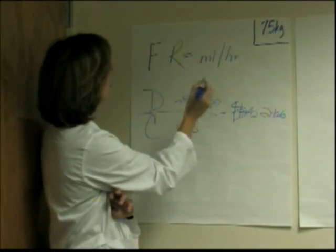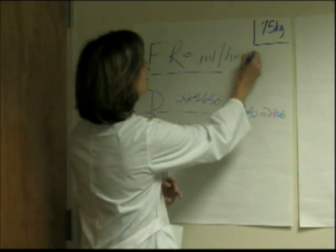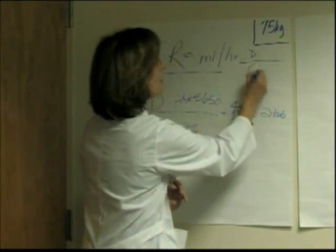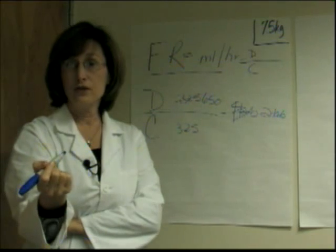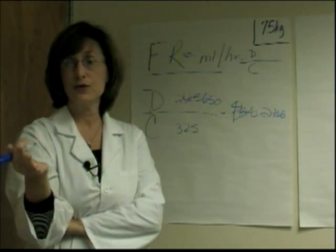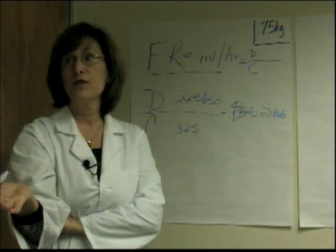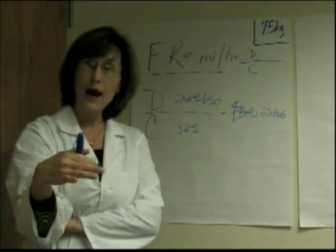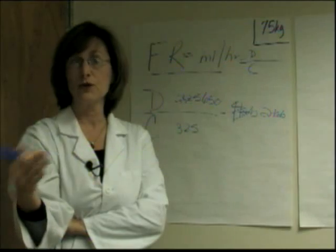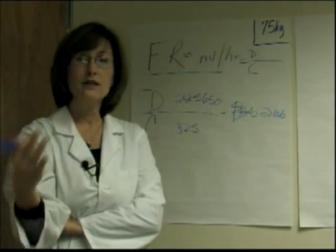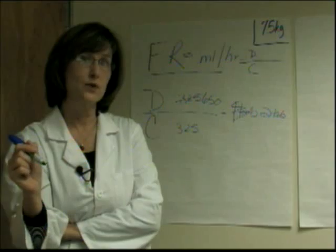Here we have the beginnings of our equation: flow rate equals dose over concentration. But a lot of our drips are ordered by weight — heparin is ordered in units per kilogram per hour. And some drips are ordered per minute, not per hour, like nitroglycerin, which is ordered in micrograms per minute. So there are a couple of other things you might need to factor into this equation.